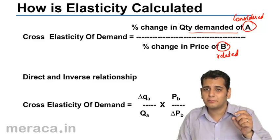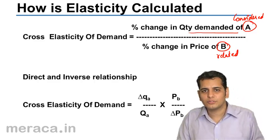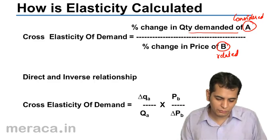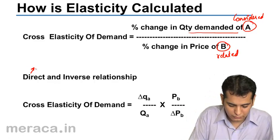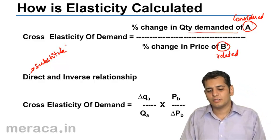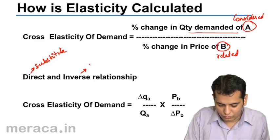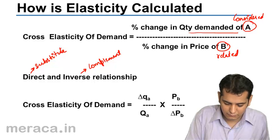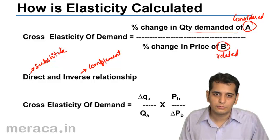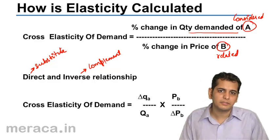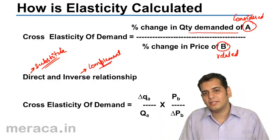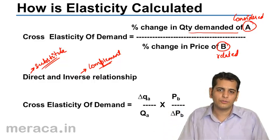The relation between the price of the related good and the demand for the good being considered may be direct or indirect depending upon the nature of the related good. If the related good is a substitute, the relation will be direct. However, the relation will be inverse in case of a complement. This means an increase in the price of a substitute will lead to an increase in demand of the good being considered, whereas an increase in the price of a complement will lead to a fall in demand of the good being considered.